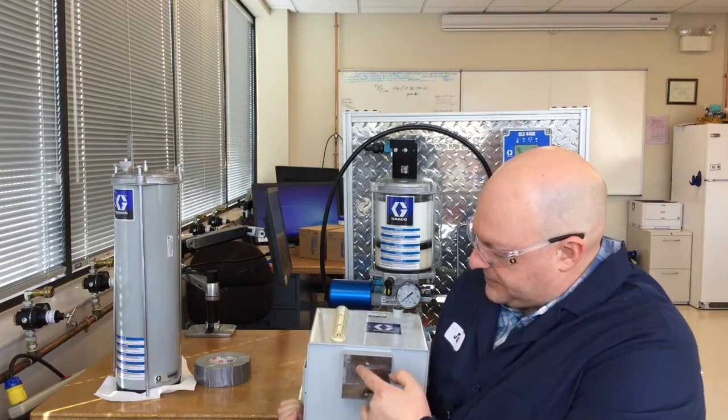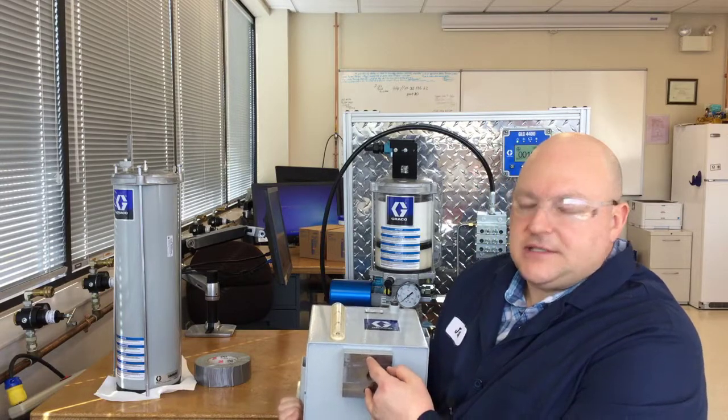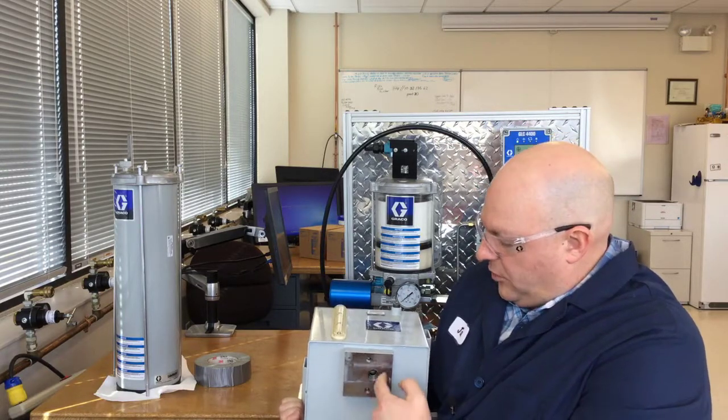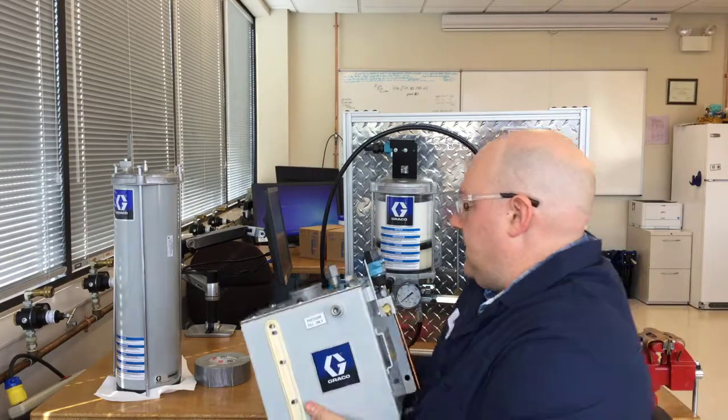This reservoir has only two mounting holes, and these are the holes that receive the base plate manifold. Some reservoirs have four more holes here because they can be used with some other pumps. Let's take a look at that now.